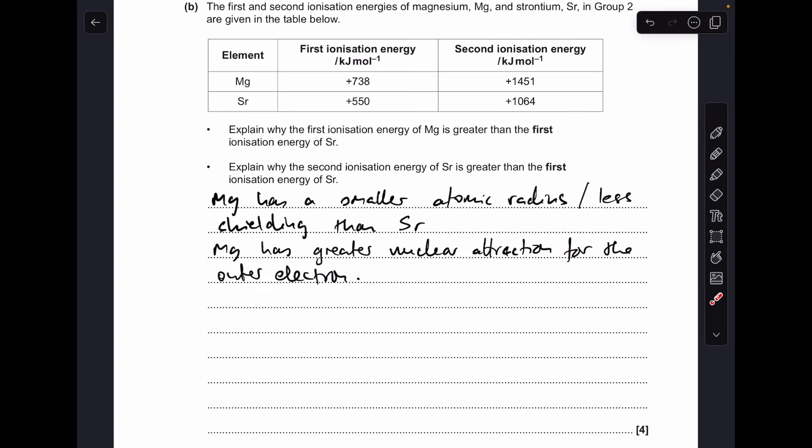Moving on to part B, the ionization energy trends. For the first bullet point, I've already got my answer, and I'll just quickly run through that. Why is the first ionization energy of magnesium greater than the first ionization energy of strontium?